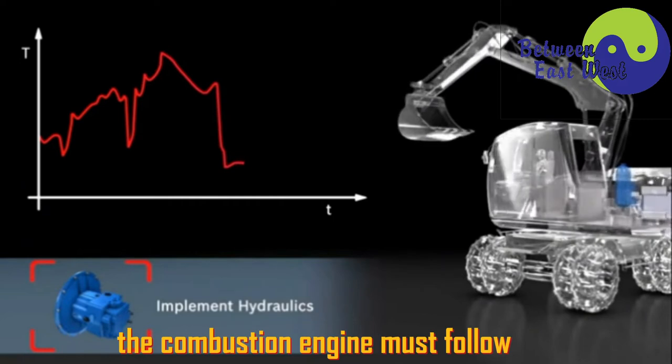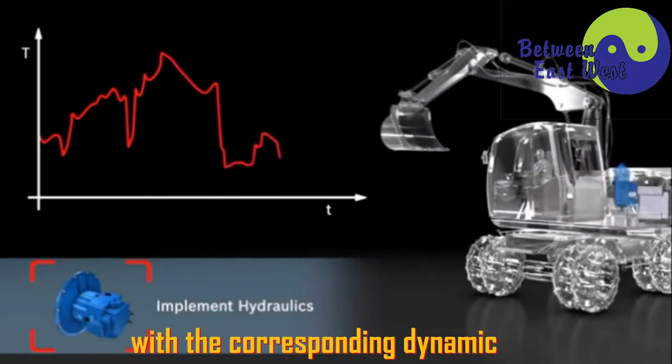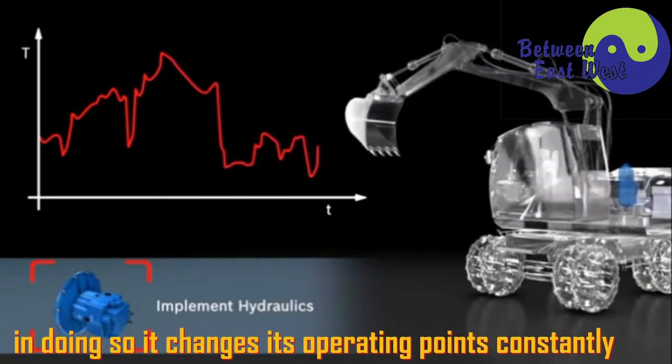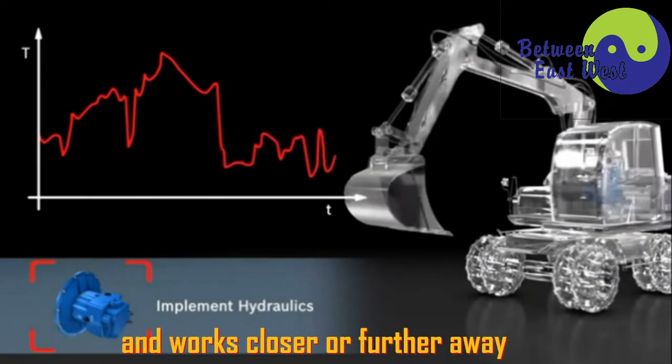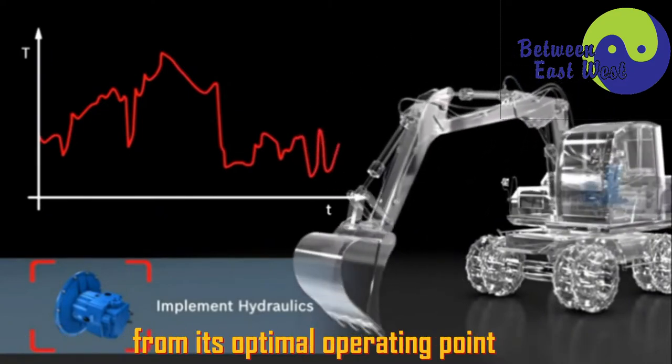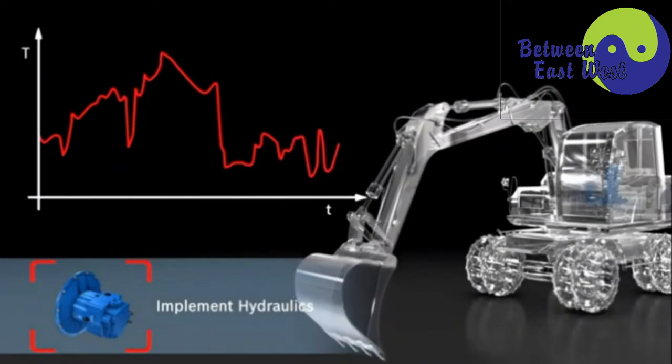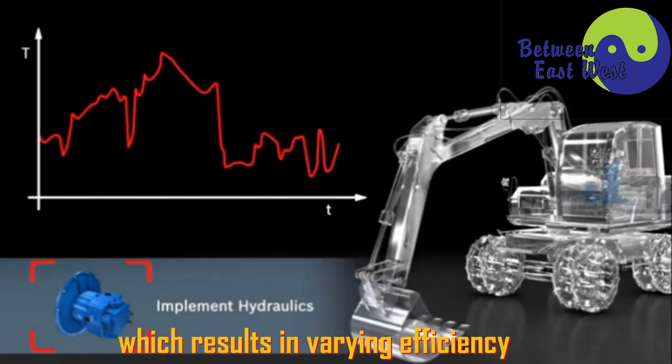The combustion engine must follow with the corresponding dynamic. In doing so, it changes its operating points constantly and works closer or further away from its optimal operating point, which results in varying efficiency.